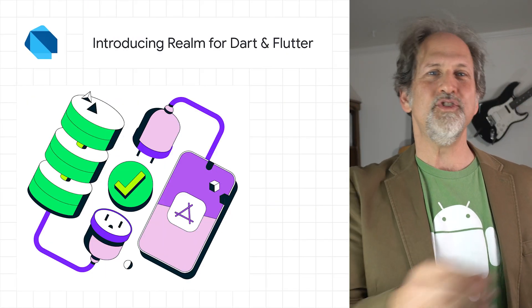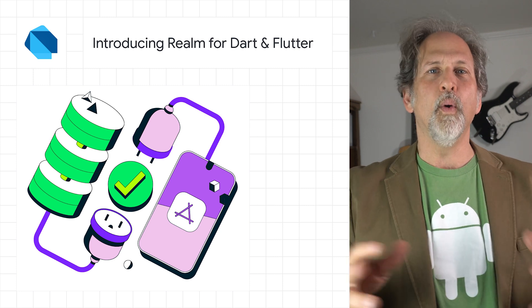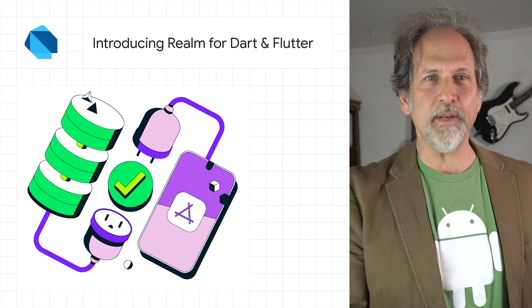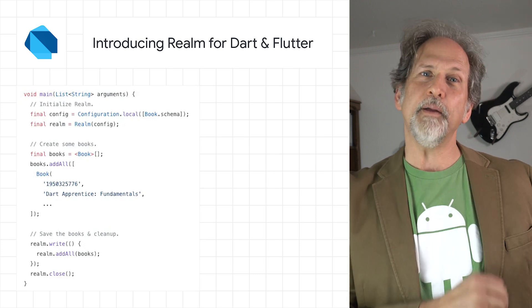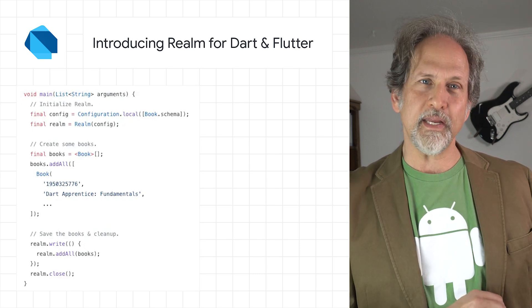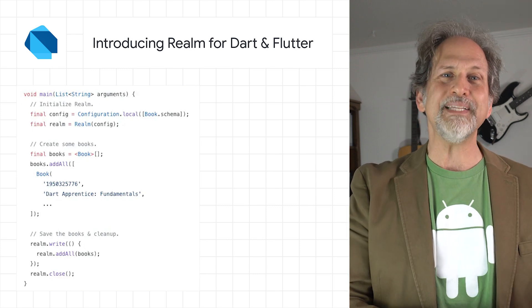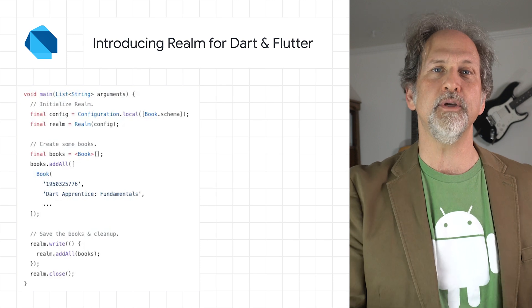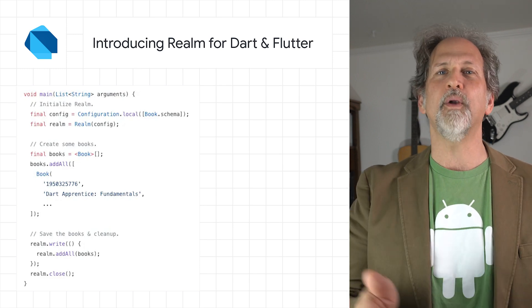MongoDB announced the general availability of Realm, a reactive object-oriented cross-platform database for Dart and Flutter. The links contain a peek behind the scenes to learn how Realm for Dart and Flutter is built as a practical example of how to build new Dart-based developer SDKs, along with details on what Realm offers.